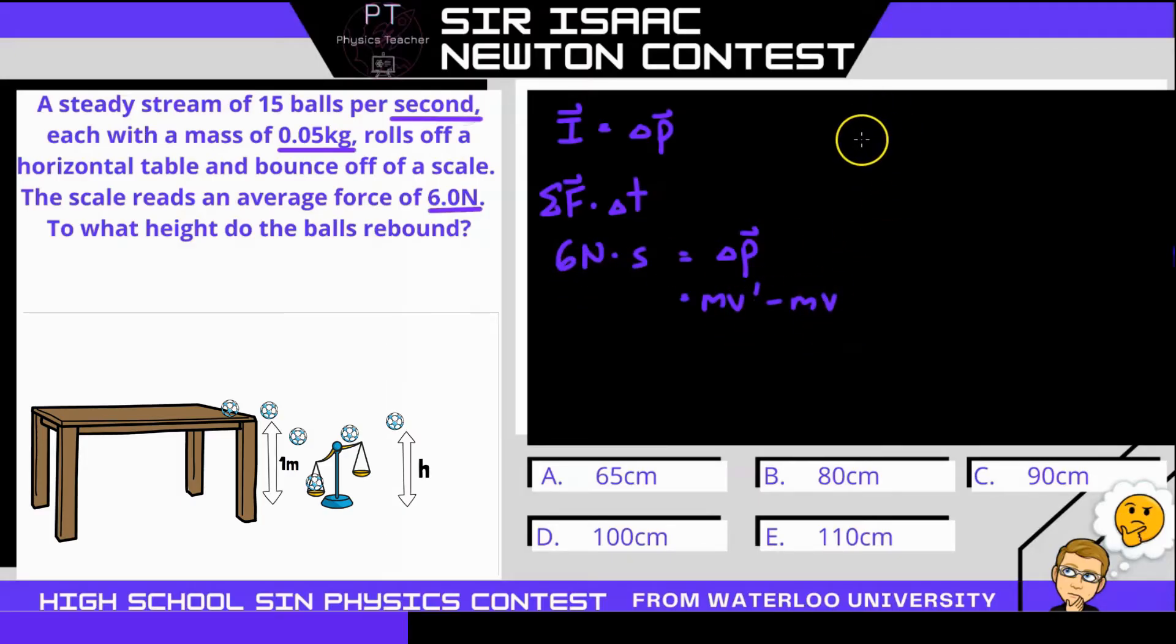Initial velocity is going to be that downwards velocity just before it hits the scale, after it's fallen one meter. So we can use our kinematics equation to figure out that initial velocity squared is going to be 2a delta d. Now, a is simply gravity, so that's 9.81 meters per second squared, and the displacement is that one meter drop from the tabletop. So if we take the square root of both sides, that initial velocity is going to be the square root of this.